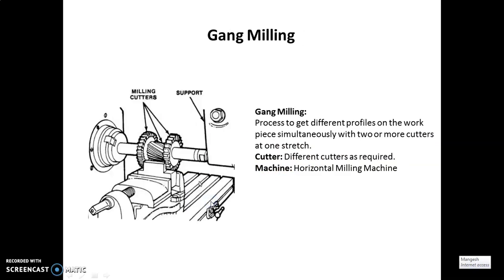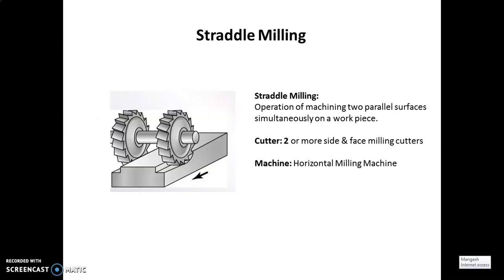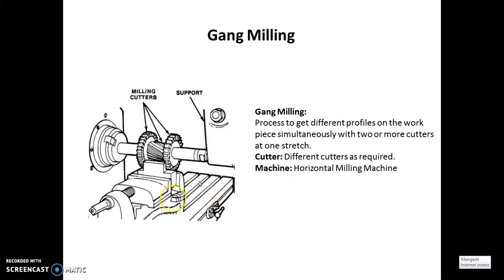Next is gang milling. Compared to straddle milling, gang milling is used to produce different profiles on a workpiece simultaneously with two or more cutters in one stretch. The advantage of gang milling is that a number of cutters can be used on the same single workpiece. Multiple different cutters are required, and the operation can be carried out on a horizontal milling machine.